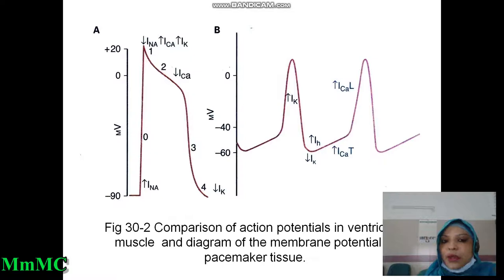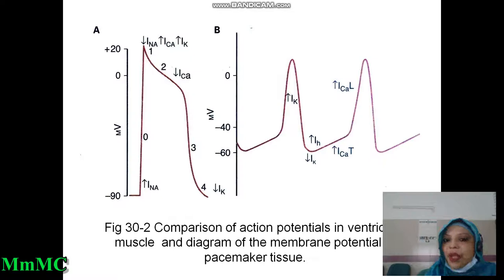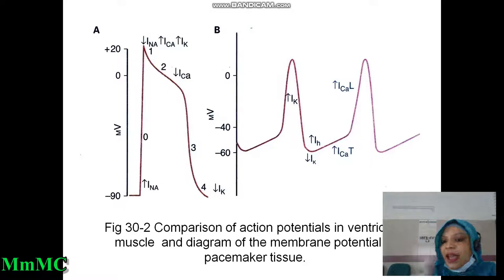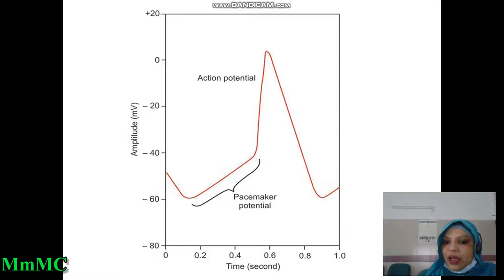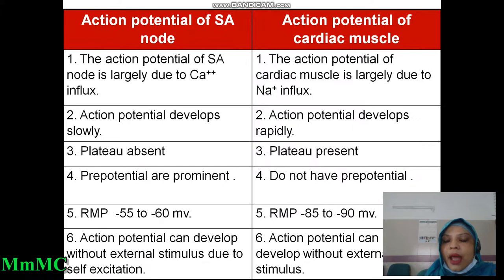This is a common MCQ question — pre-potential where found? SA node and AV node. See the figure. First figure A shows cardiac muscle action potential. Voltage-gated sodium channel causes depolarization, slow calcium-sodium channel is involved for the plateau phase, and repolarization is due to efflux of potassium through voltage-gated potassium channel. Figure B shows SA nodal action potential — first, pre-potential occurs, then depolarization, then repolarization. That is SA nodal action potential.